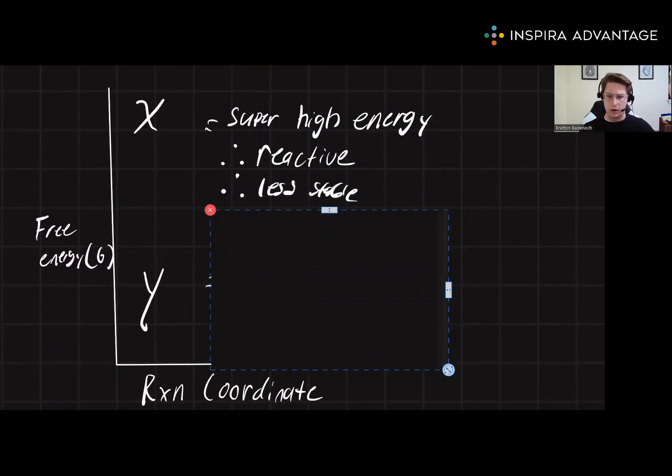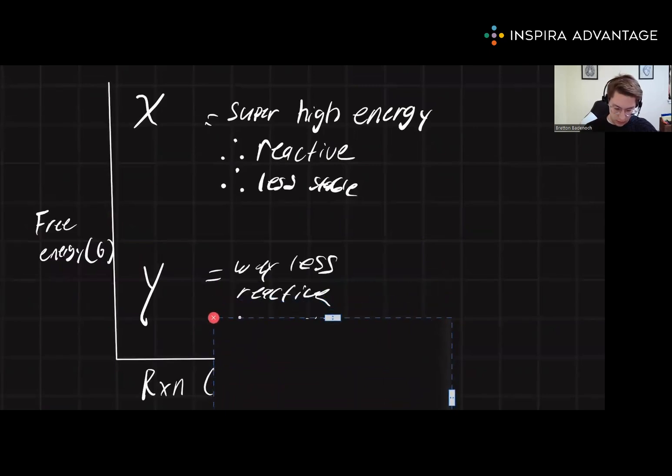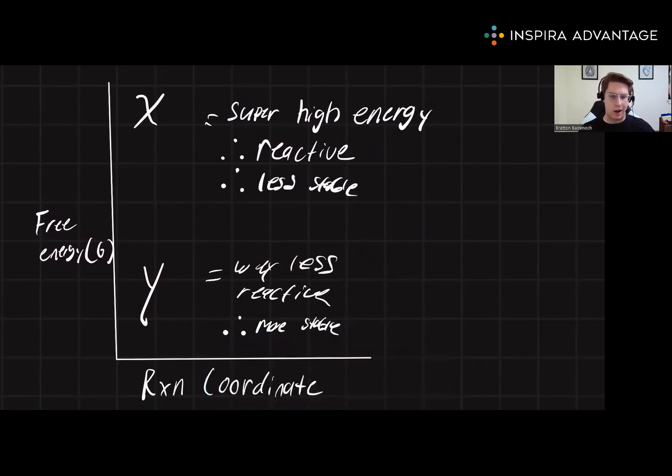Now, conversely, when we're at that lower energy y-state, we have lower free energy. We know it's lower free energy because free energy is our y-axis. This lower energy means that we're going to be less reactive and be more stable. So this product is going to stick around.